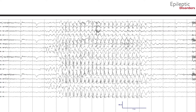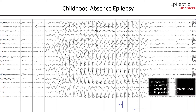This is a bipolar montage of a 7-year-old boy showing the typical pattern for childhood absence epilepsy, in which there is characteristic 3 Hz spike and slow wave discharges that appear maximal in amplitude over the frontal regions. Note how there is no post-ictal slowing after the 3 Hz spike and wave complexes.